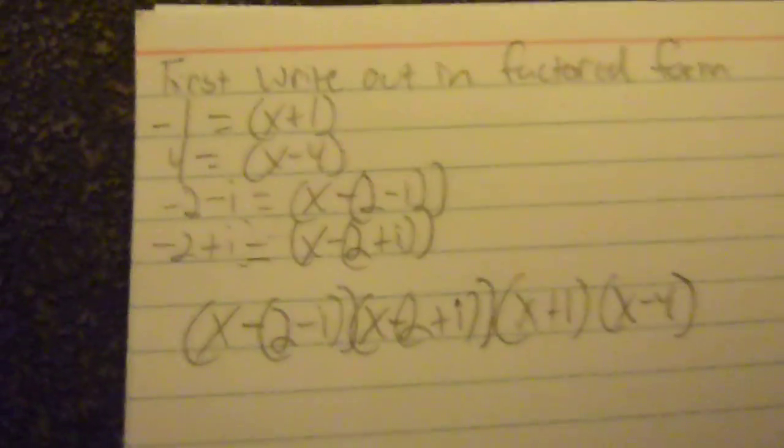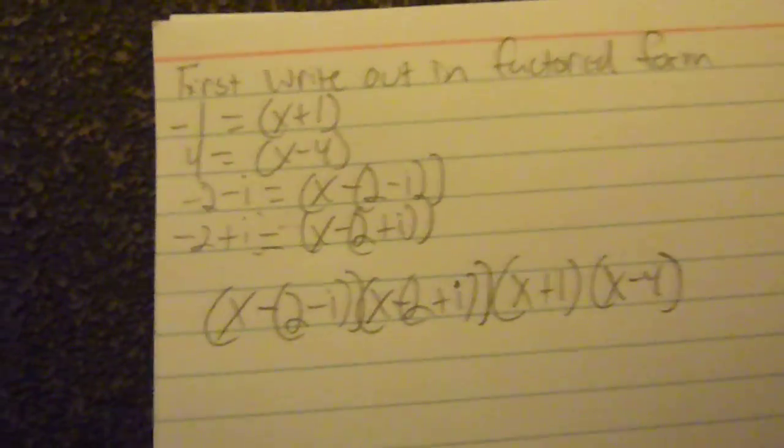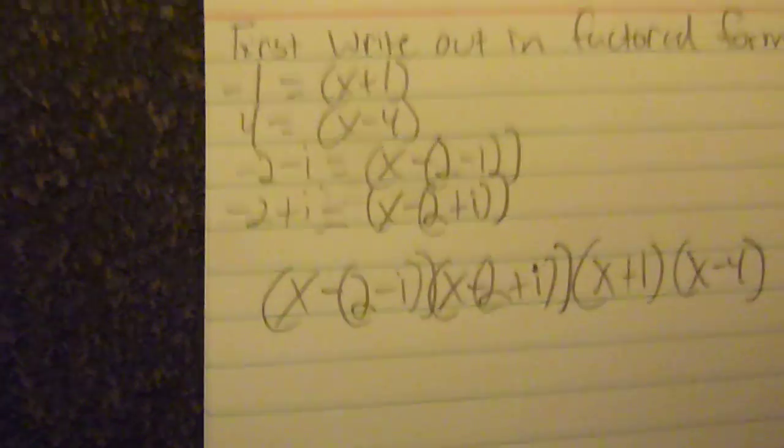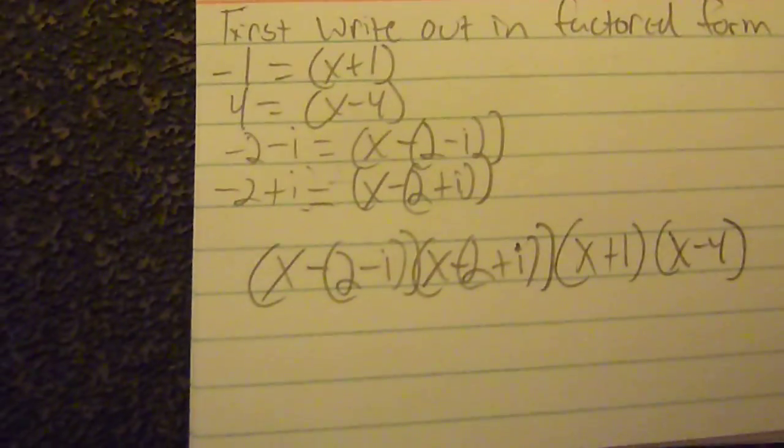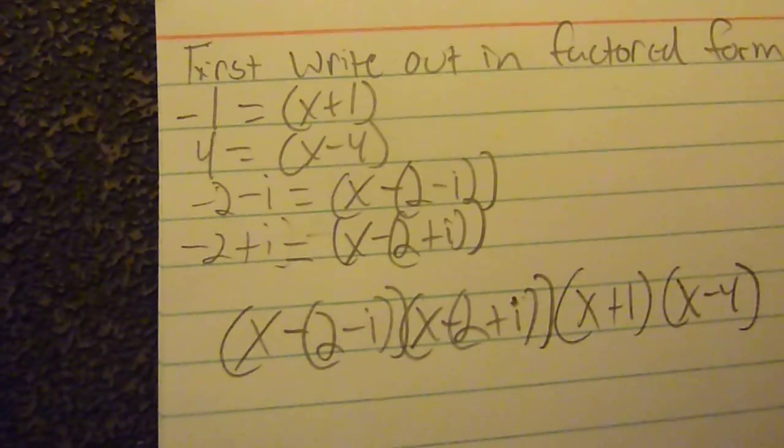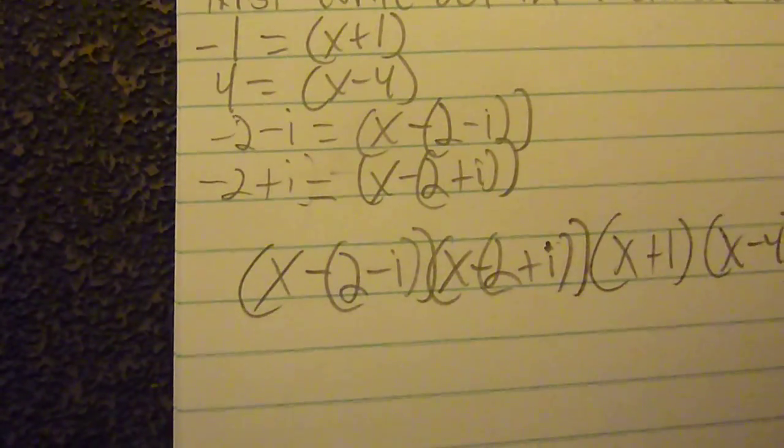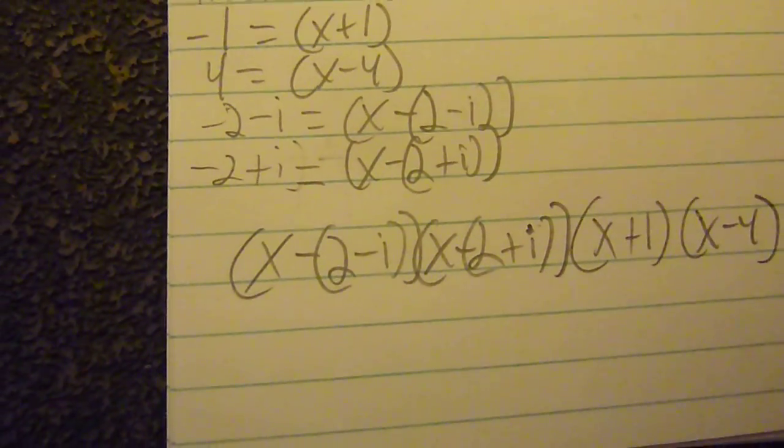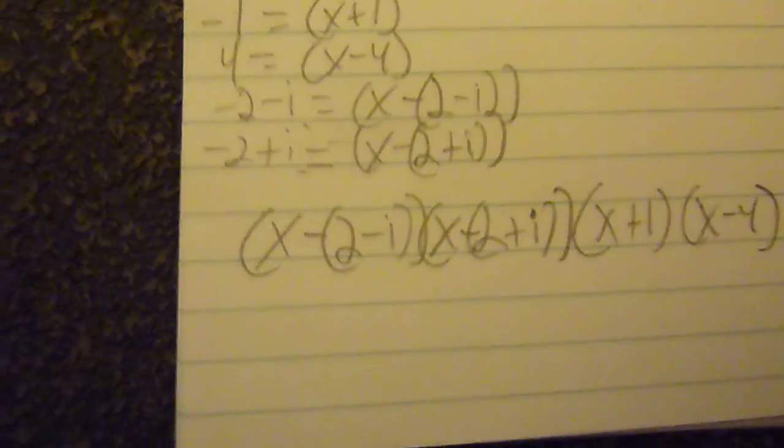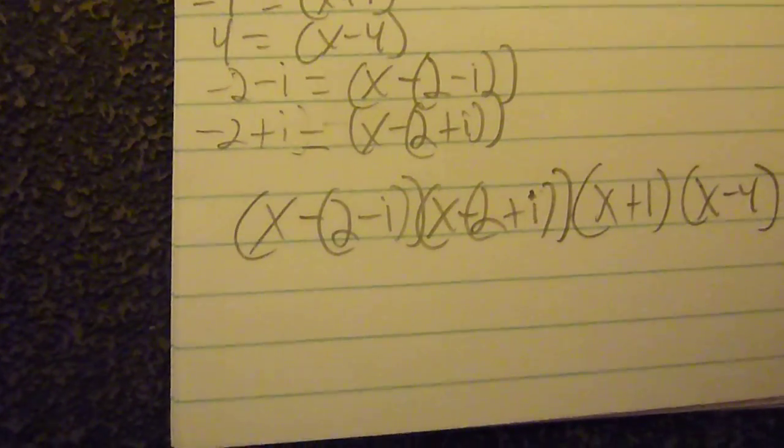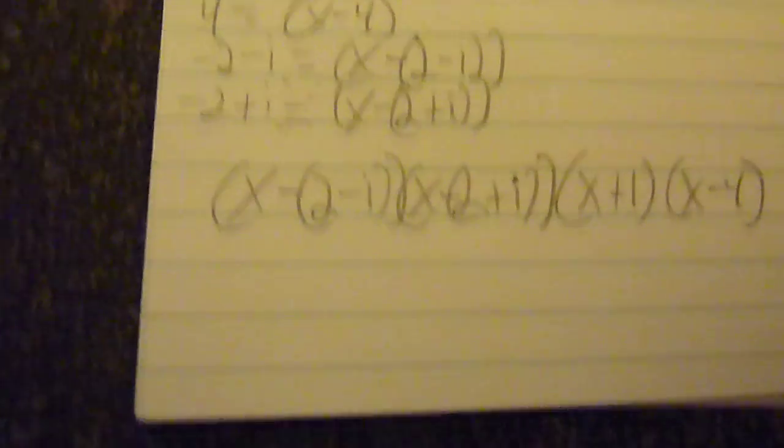First, to make it easier, write it out in factored form. So if negative 1 is a zero, x plus 1 is a factor. If 4 is a zero, x minus 4 is a factor. If negative 2 minus i is a zero, x minus negative 2 minus i is a factor. And if negative 2 plus i is a zero, x minus negative 2 plus i is also a factor.